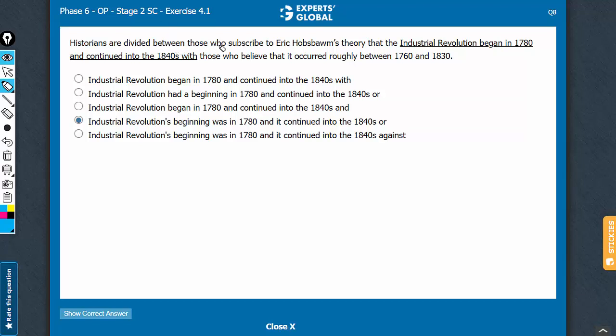Historians are divided between those who subscribe to something and those is needed. Between A and B is the correct usage. Between those and those is needed, only answer choice C has it. This is very easily going to be the right answer choice.